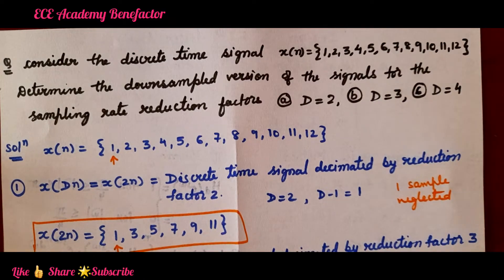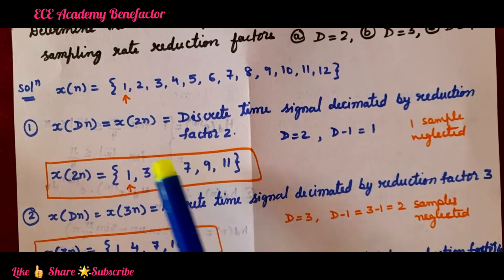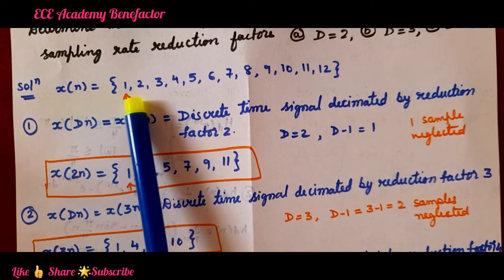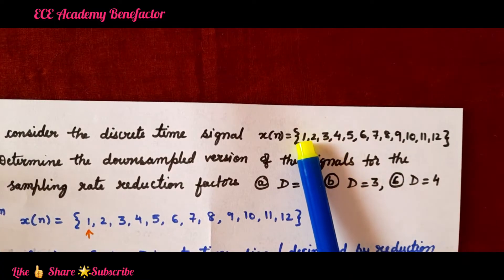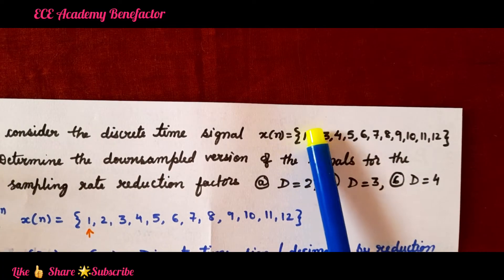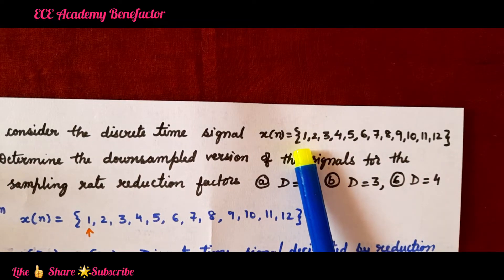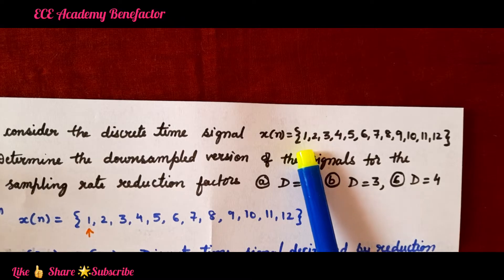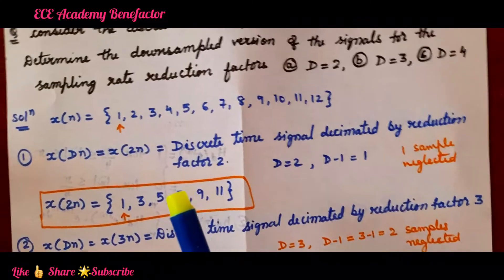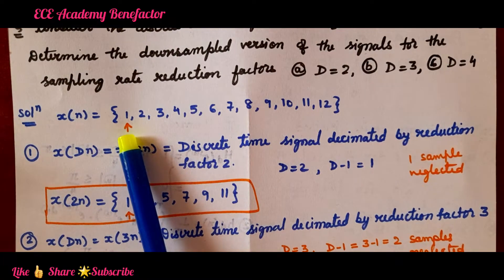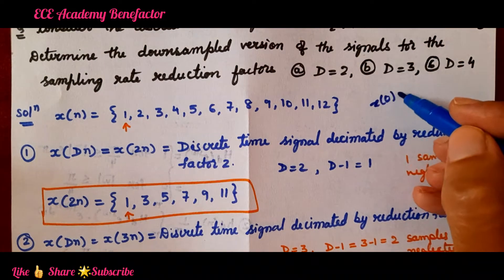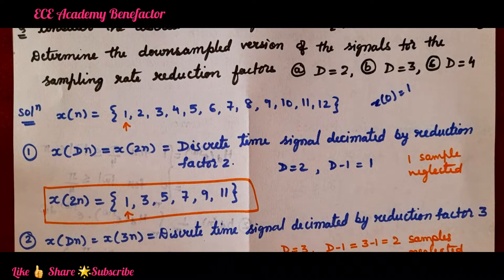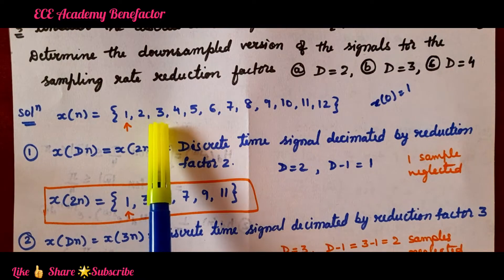This topic is from multi-rate systems. Let us start the down sampling solution. We have x(n) = {1, 2, 3, 4, 5, 6, 7, 8, 9, 10, 11, 12}. When the arrow is not given, the first value is taken at index 0. So x(0) = 1, x(1) = 2, x(2) = 3, and so on.